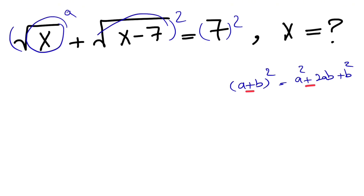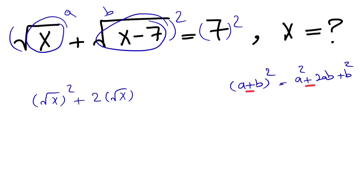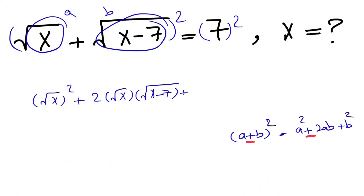So this will be basically our a and this will be our b. So we have square root of x to the power of 2, plus 2ab which is 2 times square root of x times square root of x minus 7, plus b squared which is x minus 7 to the power of 2, is equal to the other side of the equation. We have 7 squared, which is 49.